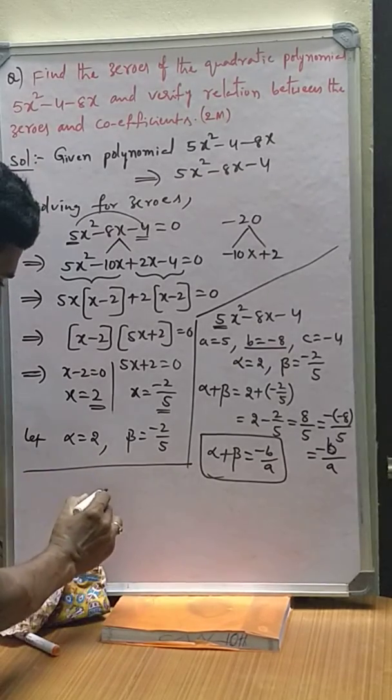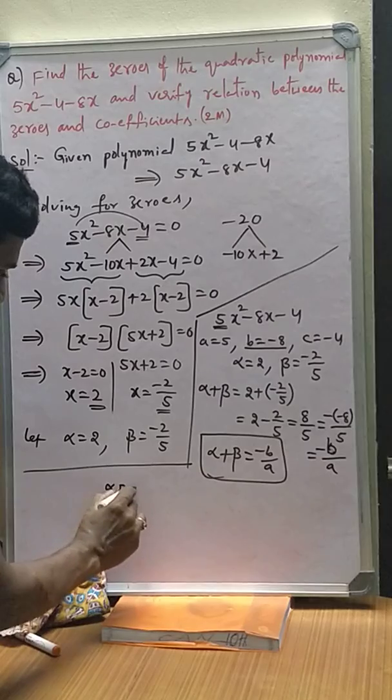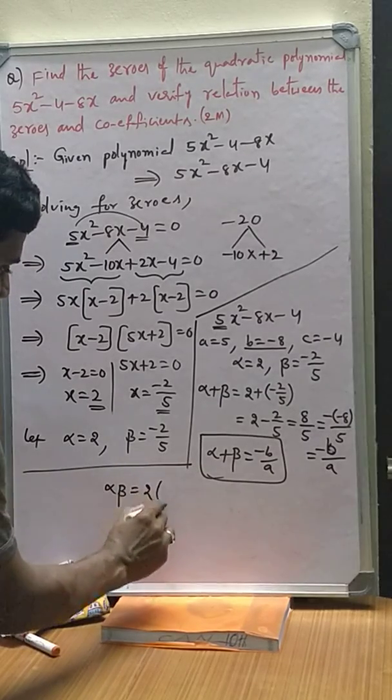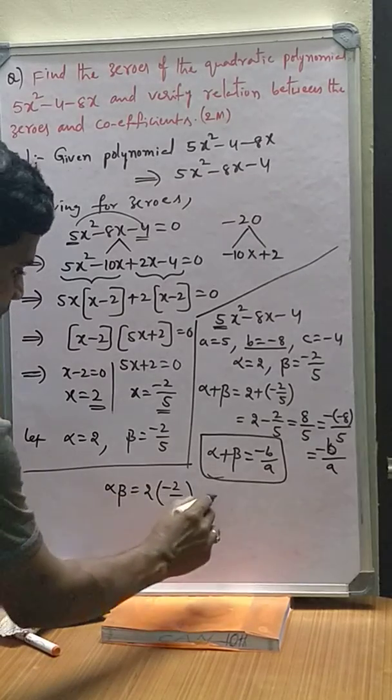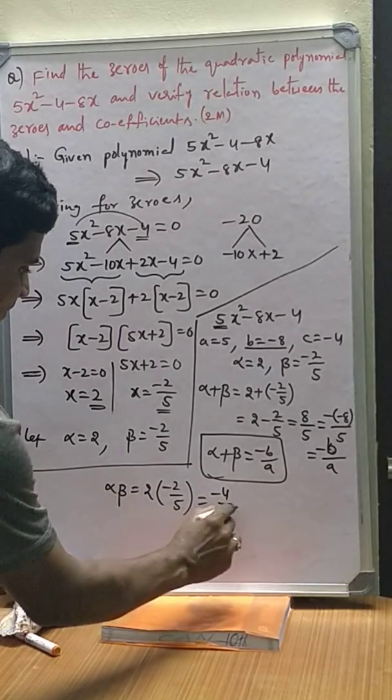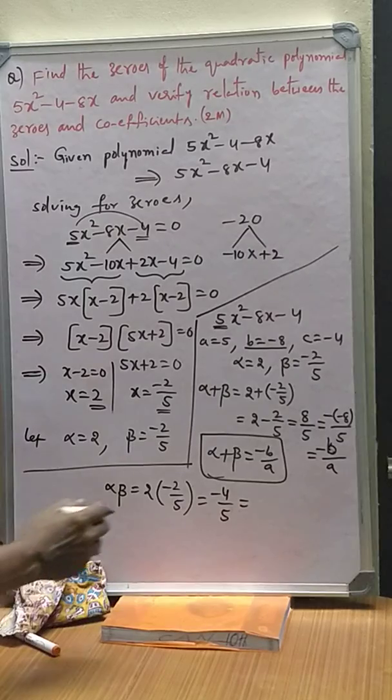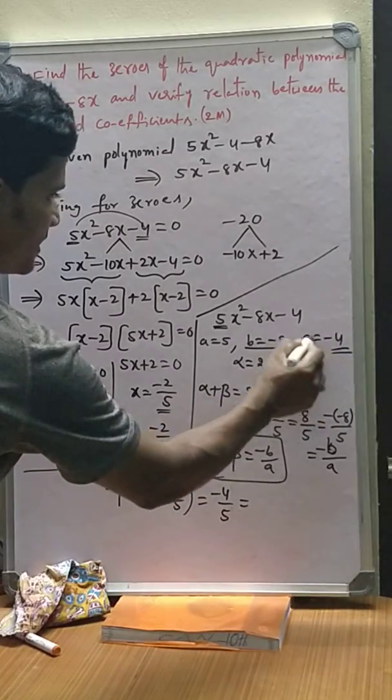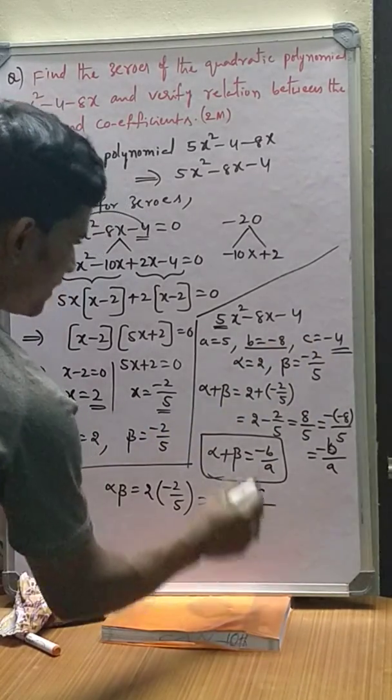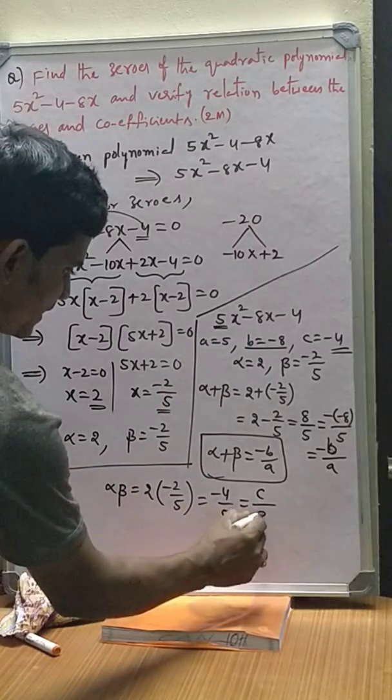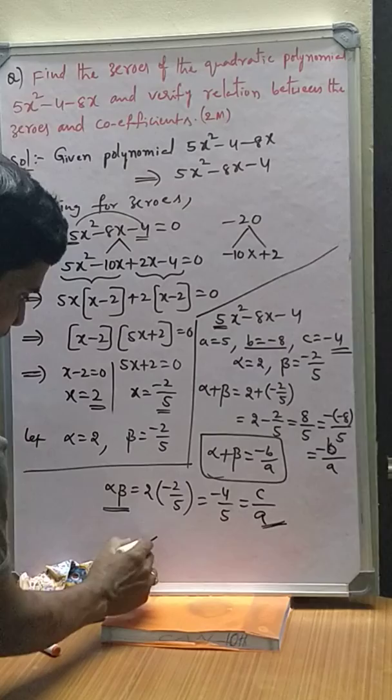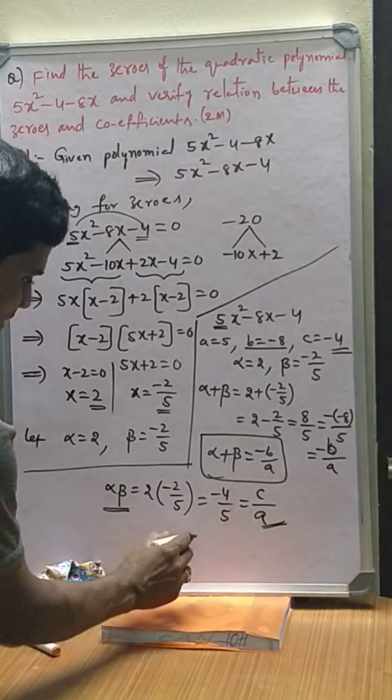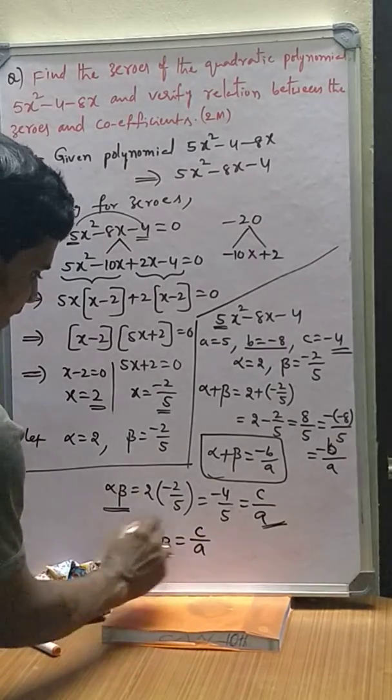Let me take α × β. α is 2 into β which is -2/5. 2 × (-2/5) = -4/5. -4 is c and 5 is coefficient a. So, from this what we can conclude: product of the zeros is given by c/a.